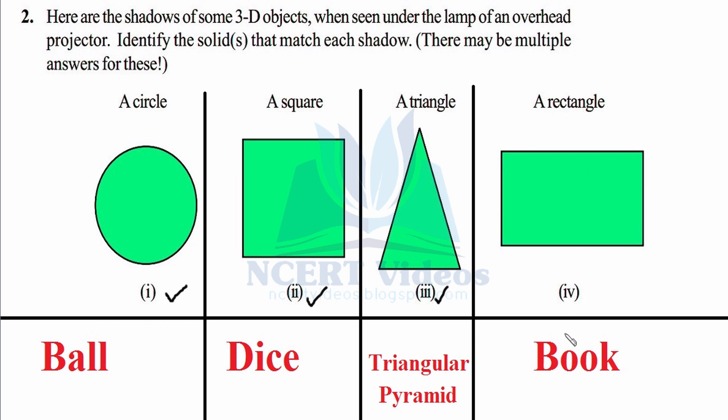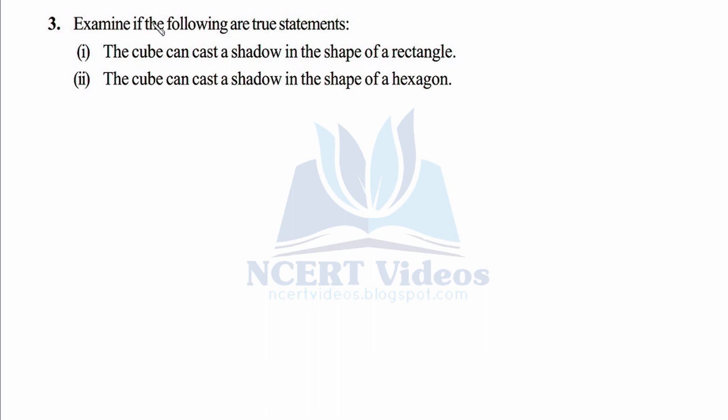A rectangle: again, a book as we did in previous question will give you a rectangular shadow. That's fourth, that completes second question. Third: examine if the following are true statements. First, the cube can cast a shadow in the shape of a rectangle.